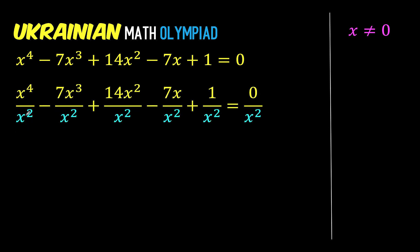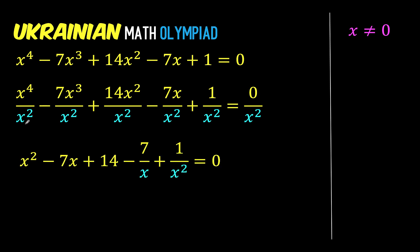Since x squared is not 0, division by x squared is valid. Simplifying: x to the 4th divided by x squared is x squared, minus 7x cubed divided by x squared is minus 7x, plus 14x squared divided by x squared is 14, minus 7x divided by x squared is minus 7 over x, and we copy 1 over x squared equals 0. The leading term now has a degree of 2.